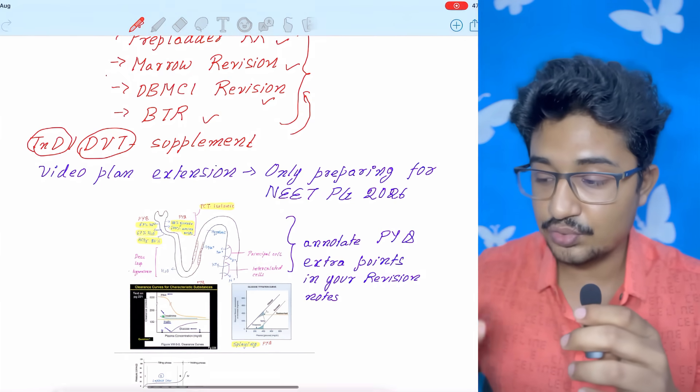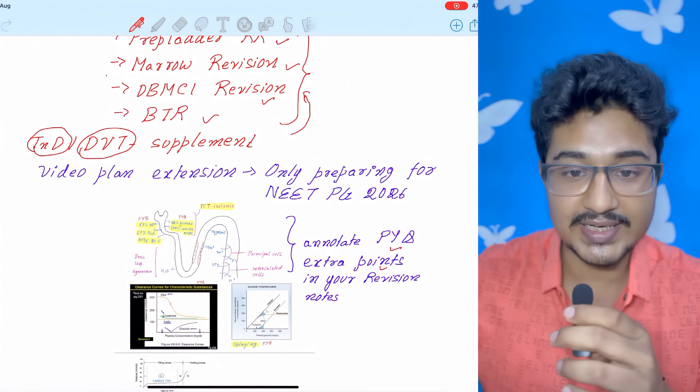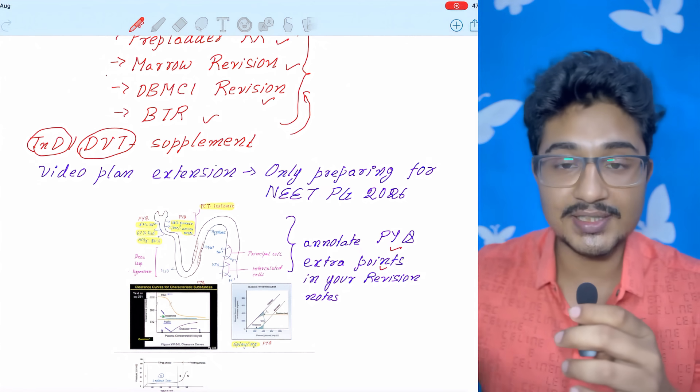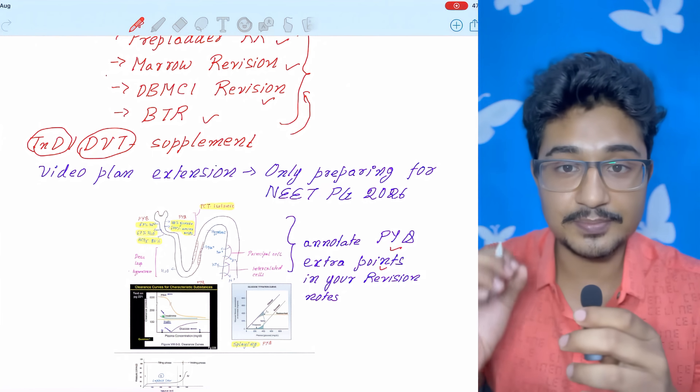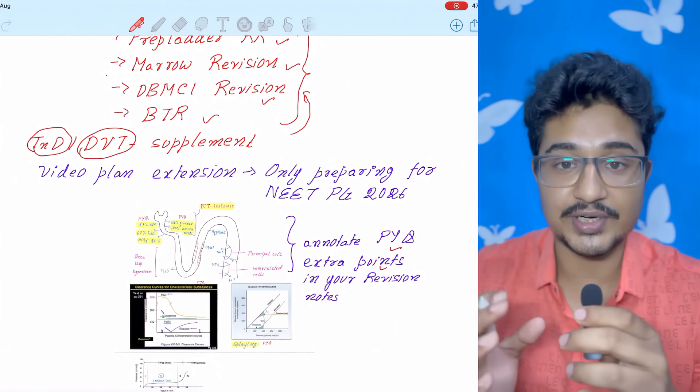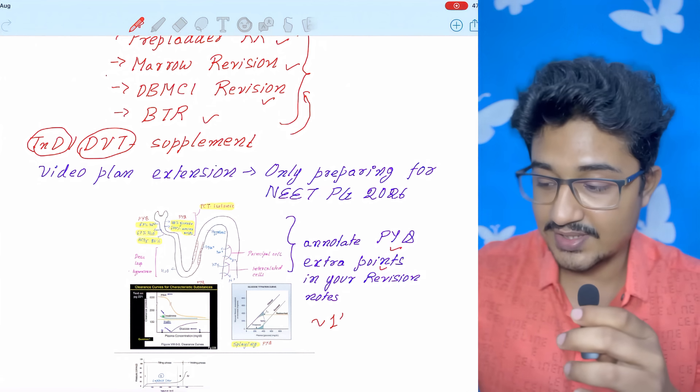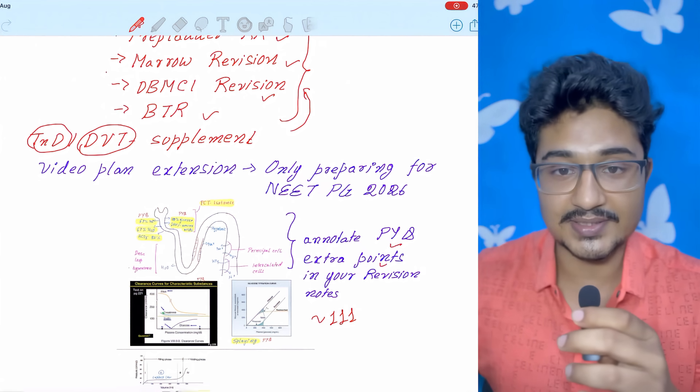In this time, I will tell you to annotate the previous year questions and the extra points you are getting from the previous year questions in your notes so that the more number of times you revise, you will see the important previous year questions and the extra points. Then you will revise it multiple number of times because this year also 111 questions came from the previous year topics in the INICT.